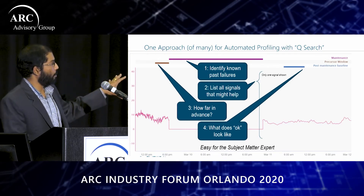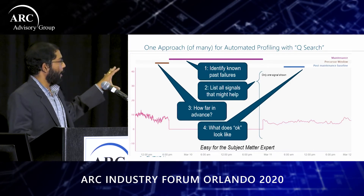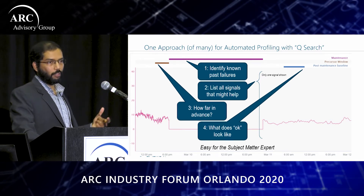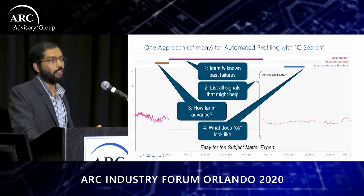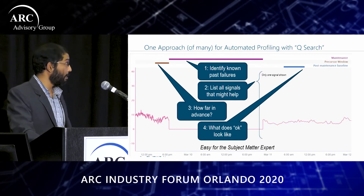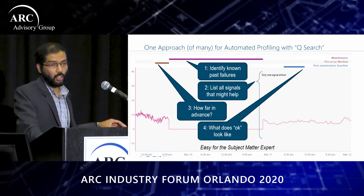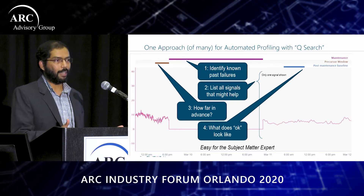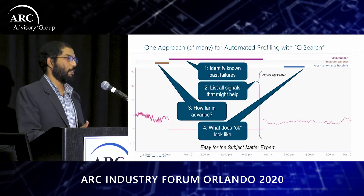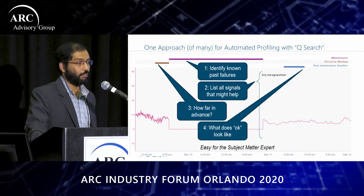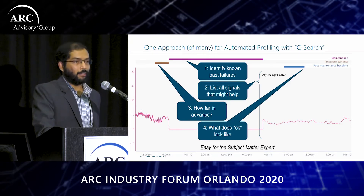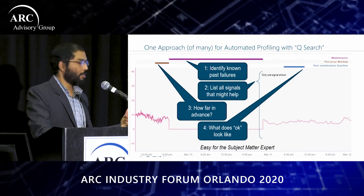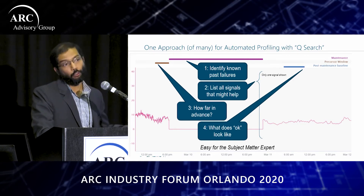These are the four questions represented graphically. The first is to identify known past failures — in other words, defining the problem and what we're looking to solve. The second step is to give QSearch a plausible list of all the signals that might serve as leading indicators of the fault. It doesn't have to be exact because we can iterate multiple times, and it's safer to err on the side of giving it too many signals than too few.